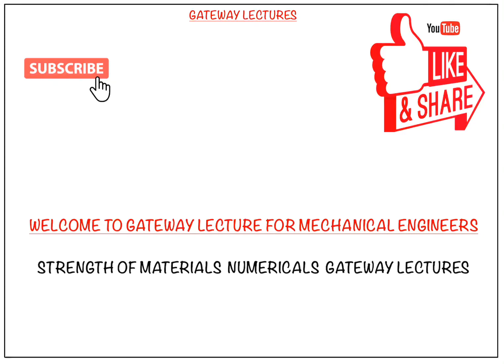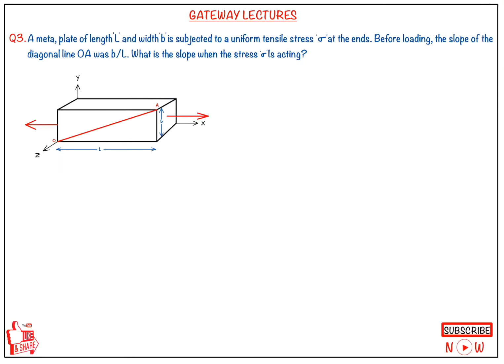Hi everyone, welcome to Gateway Lectures. Today we have a good numerical. A metal plate of length L and breadth B is subjected to a uniform tensile stress sigma at the ends along the length axis L. Before loading, the slope of the diagonal OA was B by L. What will the slope be when the stress sigma is acting?